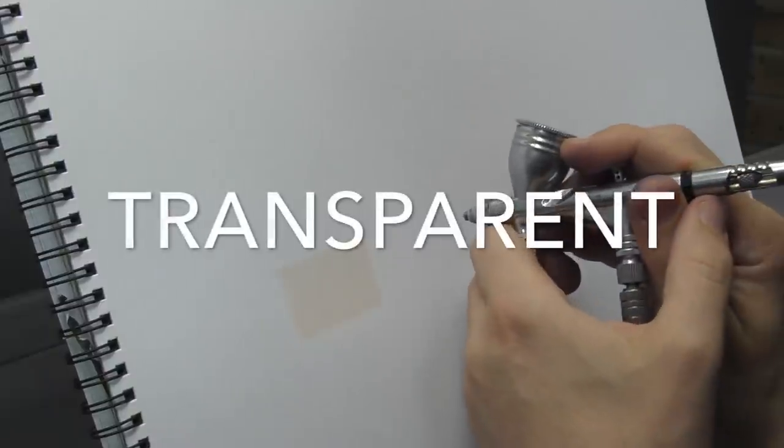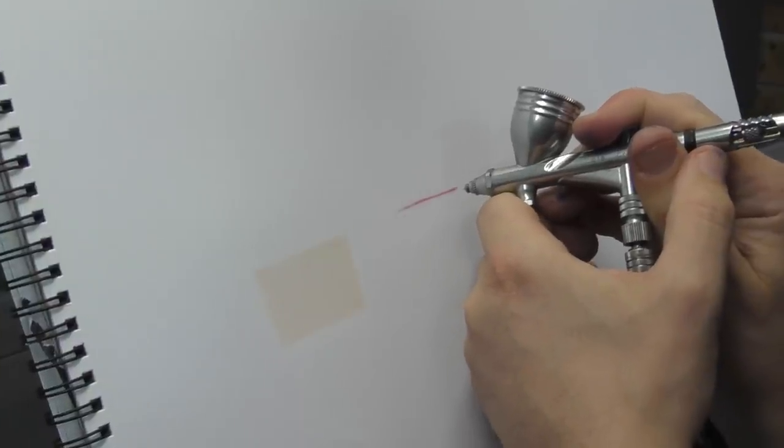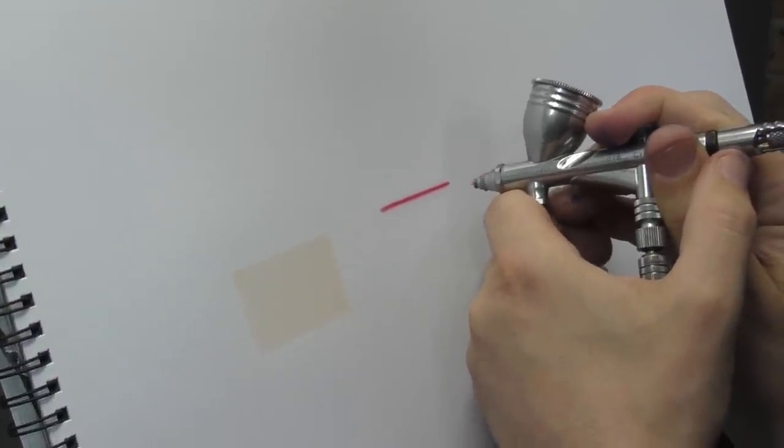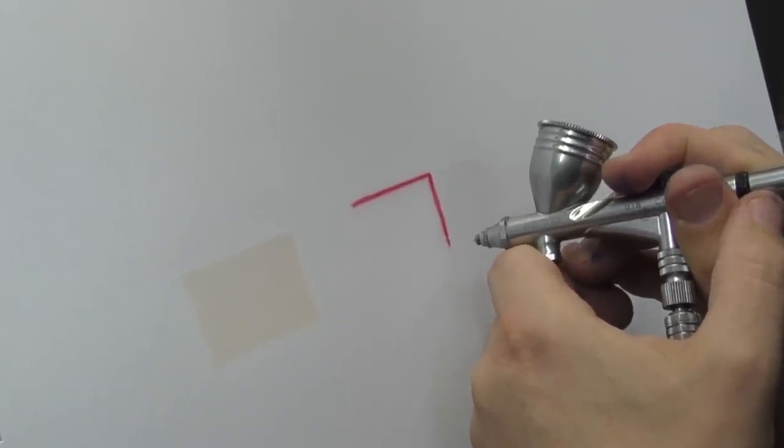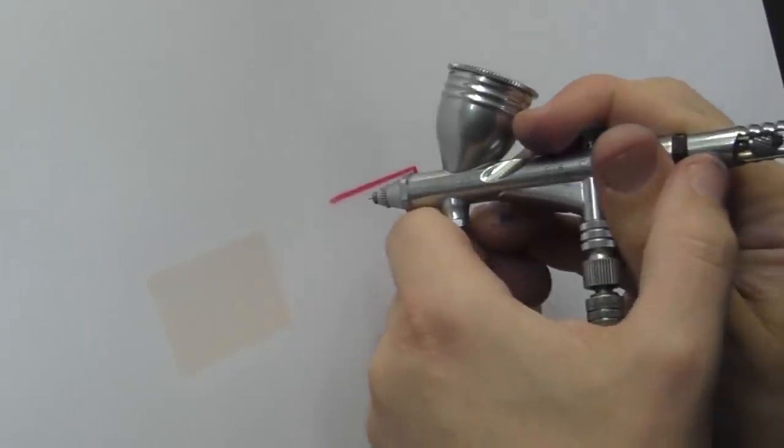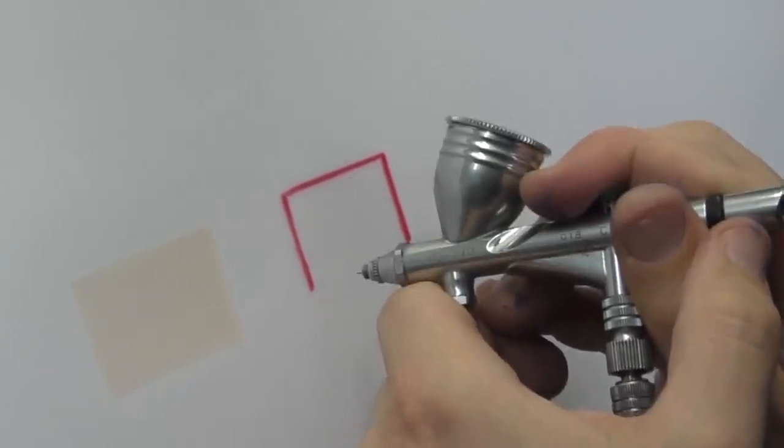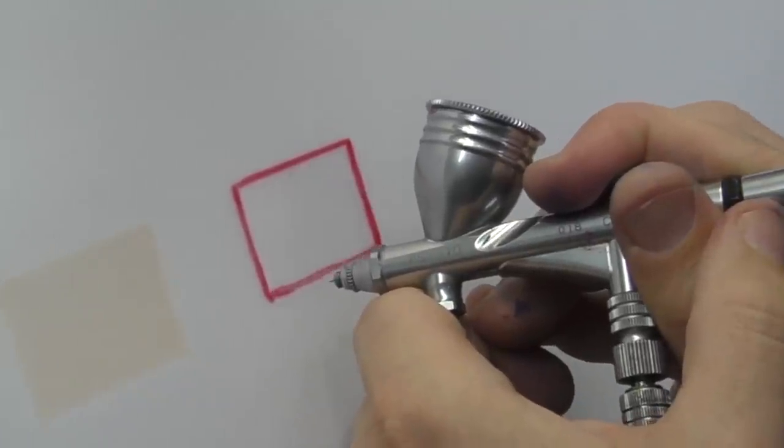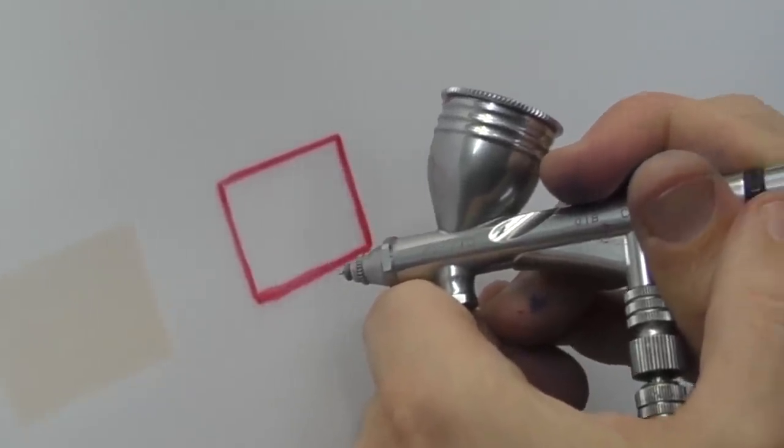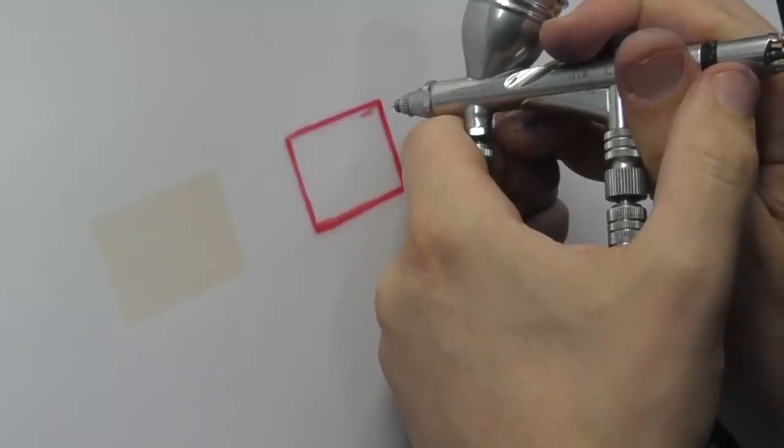Now let me show you how to flat tone using a transparent tone. This is Scarlet by Illustration Colors by Createx, and this is completely transparent. This is going to make it a lot more difficult to get an even tone, but I'll still give you a demo. You'll also notice I've switched to the 0.18mm PS770 GSI Creos. This will just atomize a little bit finer, making it a bit easier to control, hopefully.